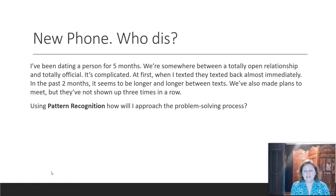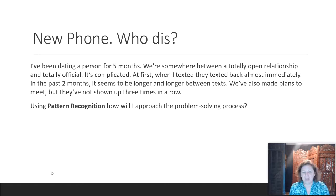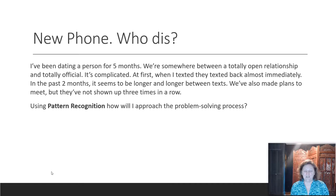Let's take a look at another example. So you've been dating someone for about five months, and you're not necessarily official, but you're not totally open either — somewhere in between. Things started out really well, but now it's been two months and there's a longer and longer time period between text messages. This individual has even blown you off, stood you up, not shown up for meetings three times in a row. So let's use some pattern recognition to solve this problem. I know a lot of you know where this is going, but when you're in these shoes, it's a lot harder than when you're looking at it from the outside.